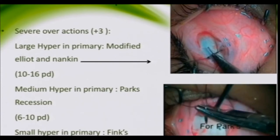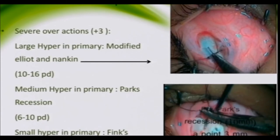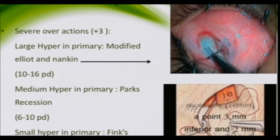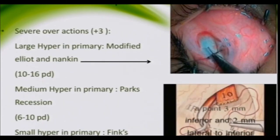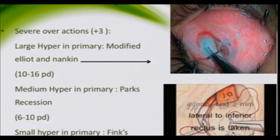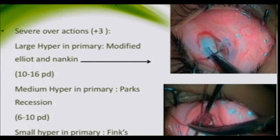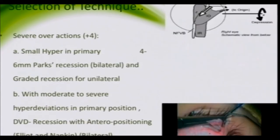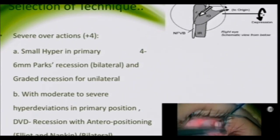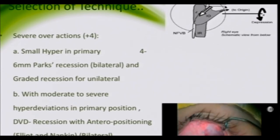We go 3 millimeters inferior and 2 millimeters temporal to the inferior rectus — that is the Parks point. The most important thing when tying the muscle at the desired insertion is that we must bunch the muscle, otherwise there are chances of anteriorization and anti-elevation syndrome. This shows the true anteriorization with bunching.